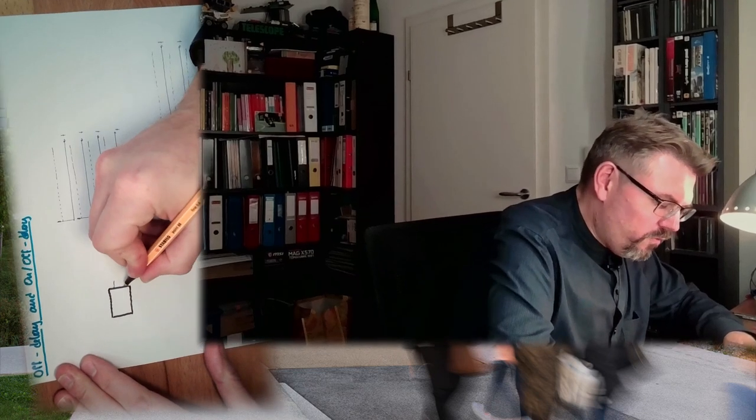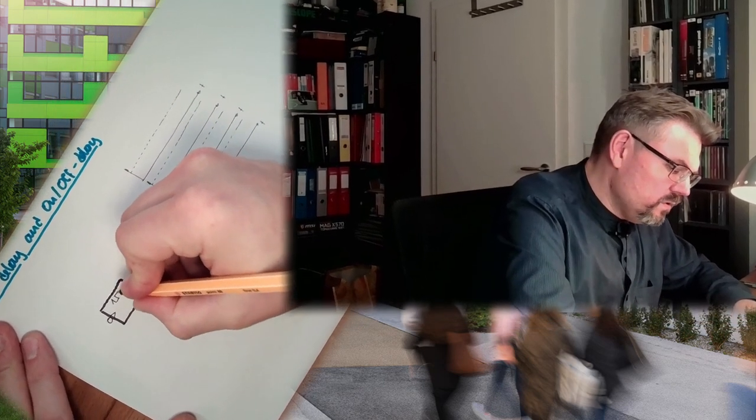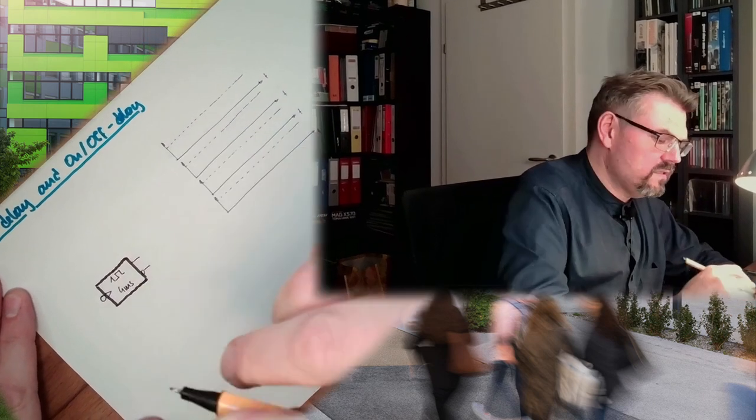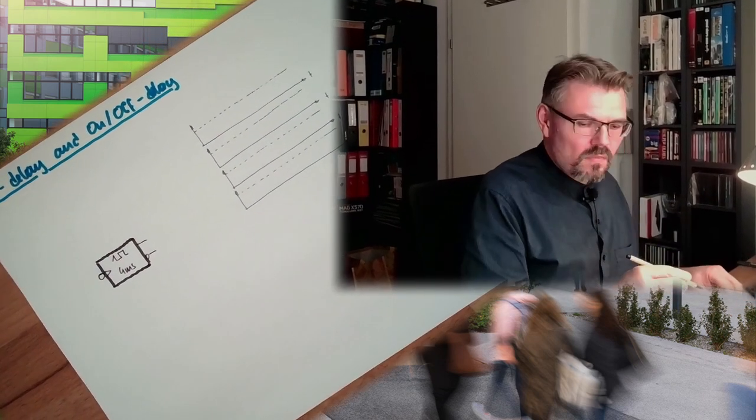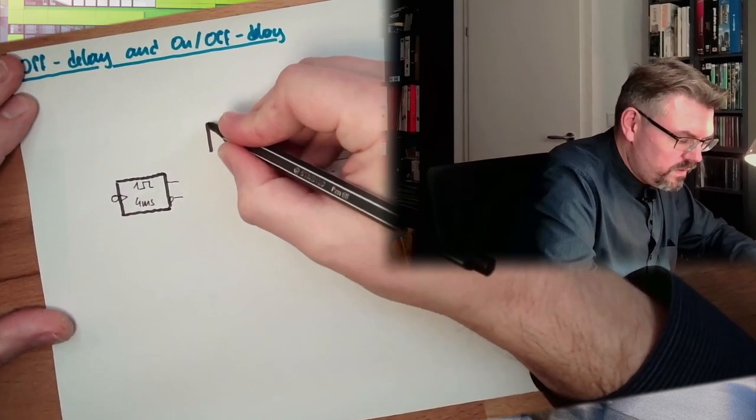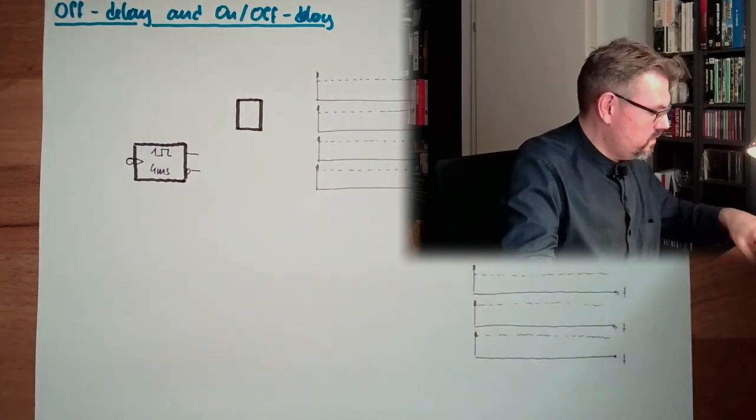So we are also using a mono-stable time element. Here, this is the time element. We are again having two outputs, the output and the inverted output. And we are again having a triggered input, however, this time I make it inverted. So this is also a time element, let's say 4 milliseconds. And this time I am not using an AND, I am using an OR at the end here.